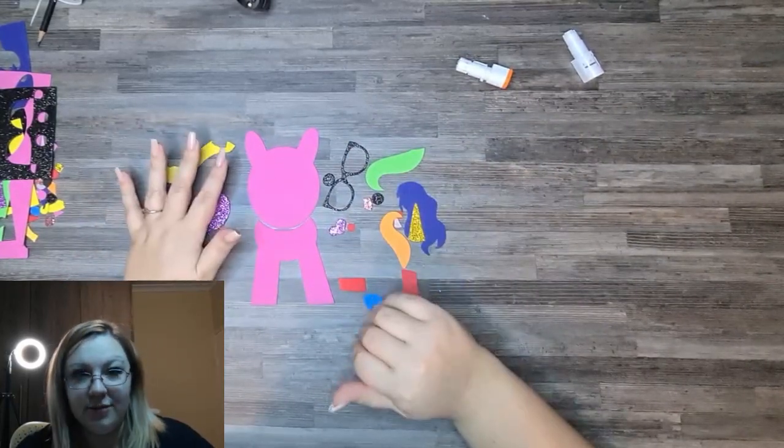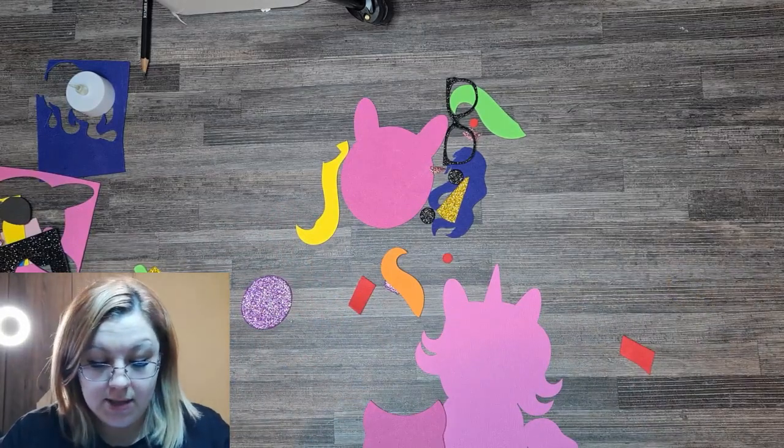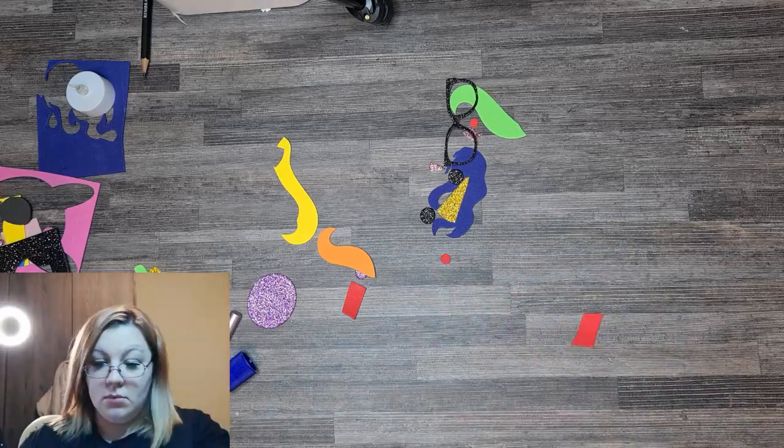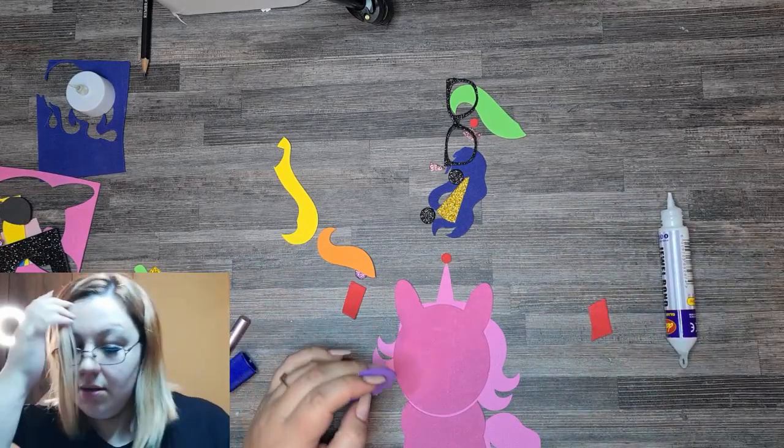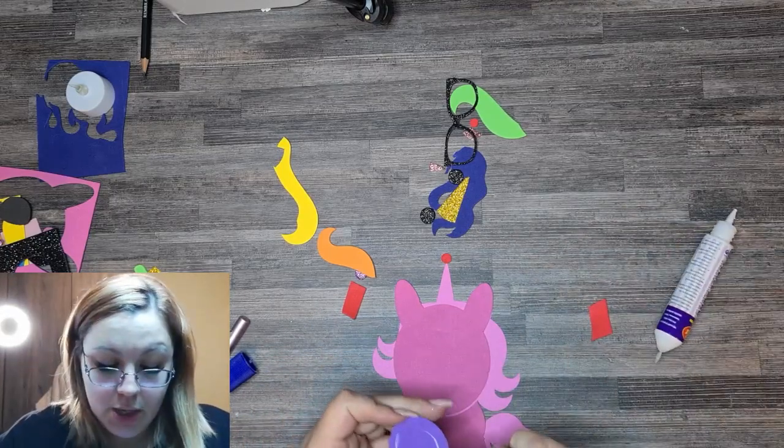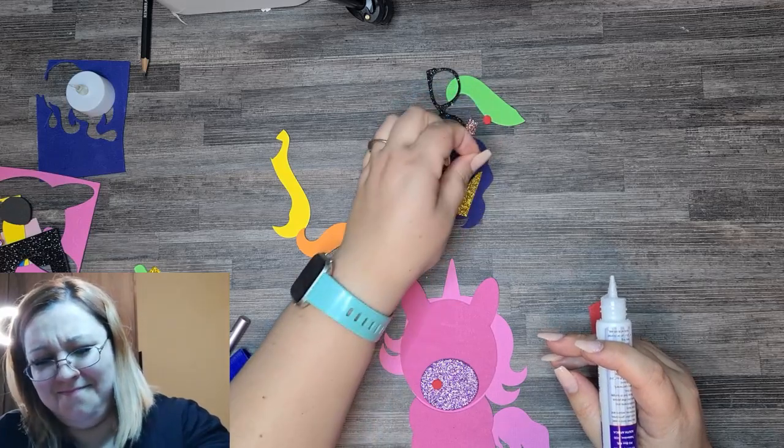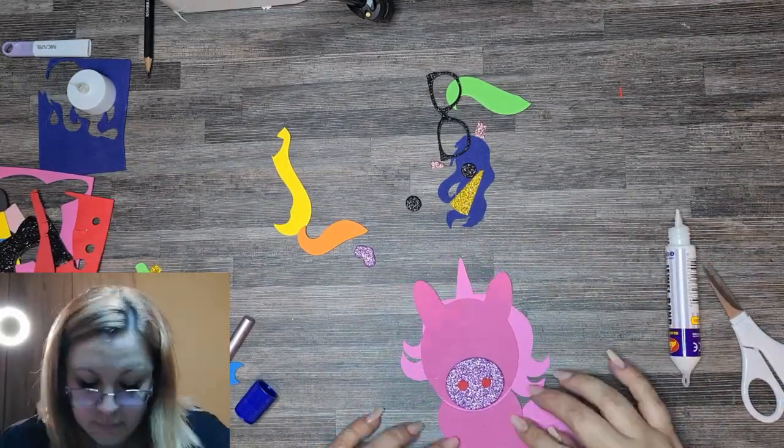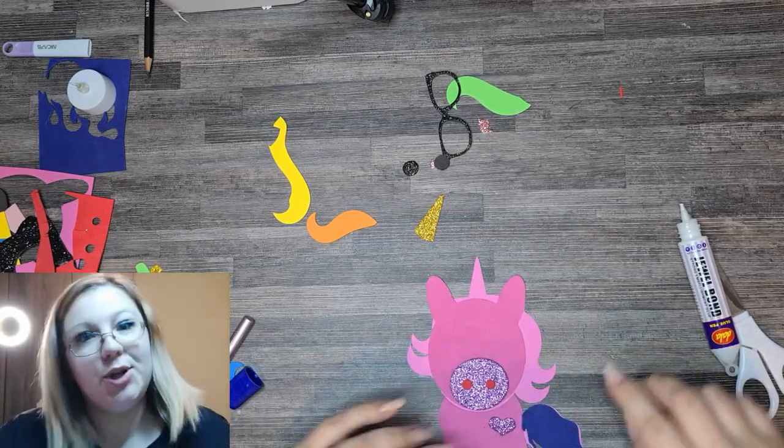Okay now we have our unicorn cut, we can start sticking it down. Very basic stuff, I'm just using some jewel bond, and our scrapbookers will probably be having a heart attack right now. I like having that little gap that kind of separates the head a little bit, looks quite cute. The nose, we have the nose. Okay well this one definitely didn't cut all right but that's okay. What's a craft project without a little fail, right?